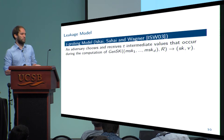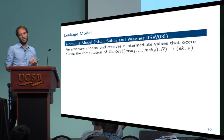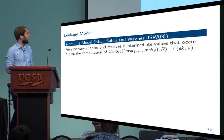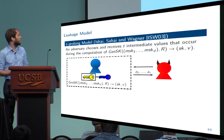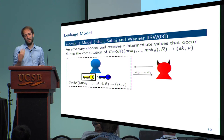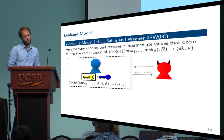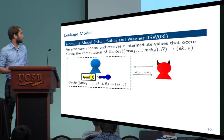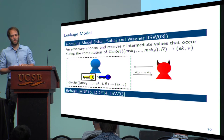Now I want to speak about the leakage model. We assume the T-probing model, where an adversary can request any T intermediate values and learn them when the blue party executes the GenSK algorithm. The adversary could simply try to learn all the shares of the secret. To prevent him from learning them across more than one session, we need some kind of a refreshing algorithm, so after each session we simply need to refresh the shares.